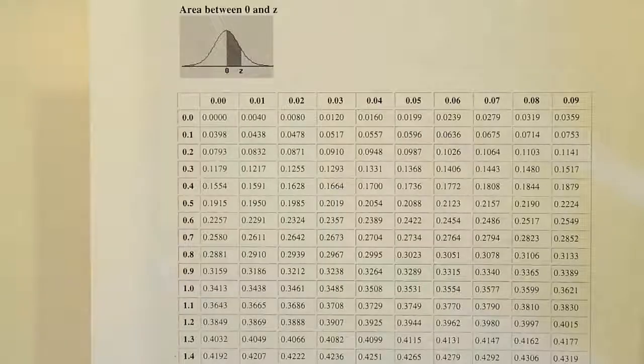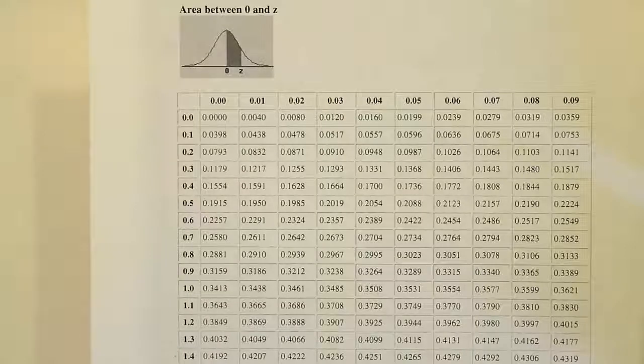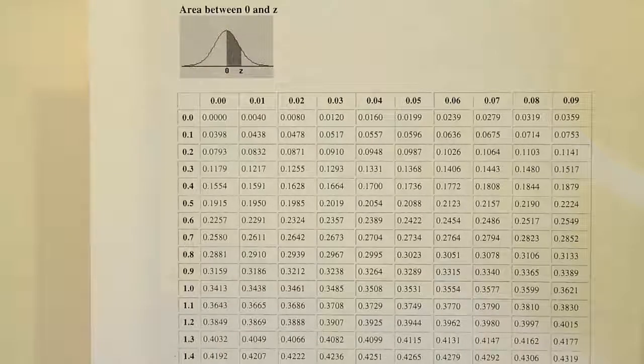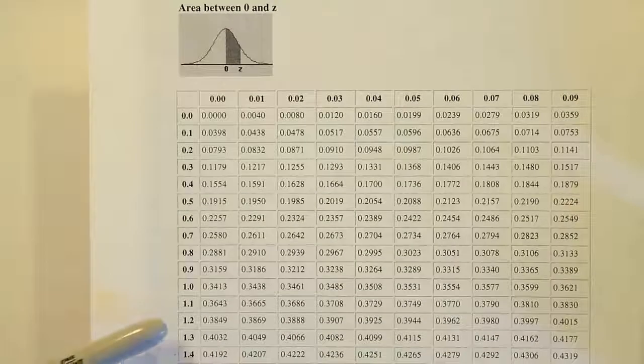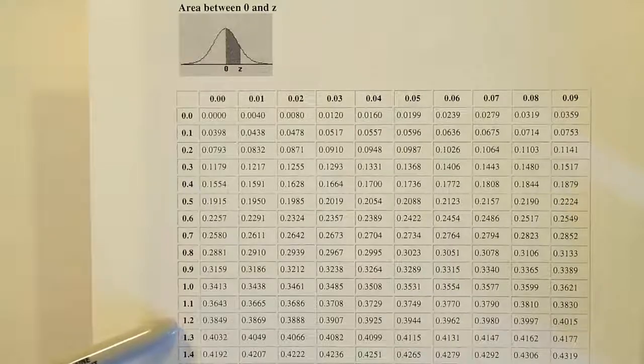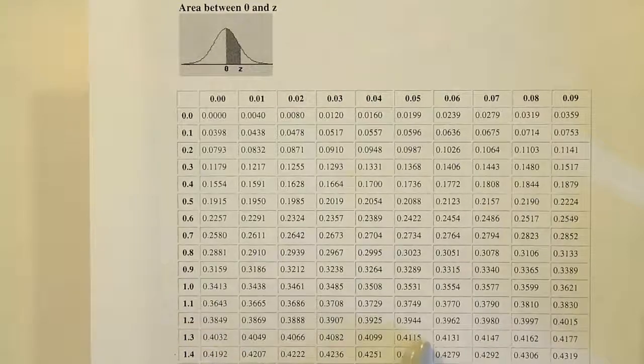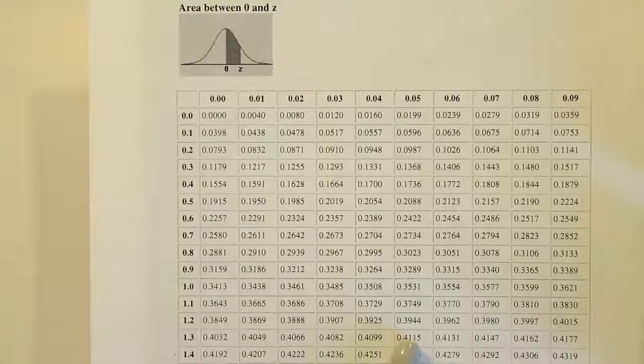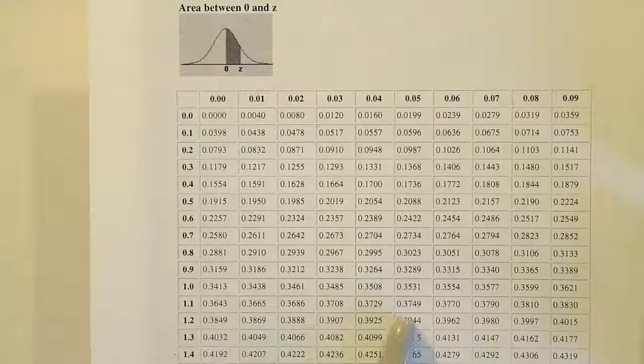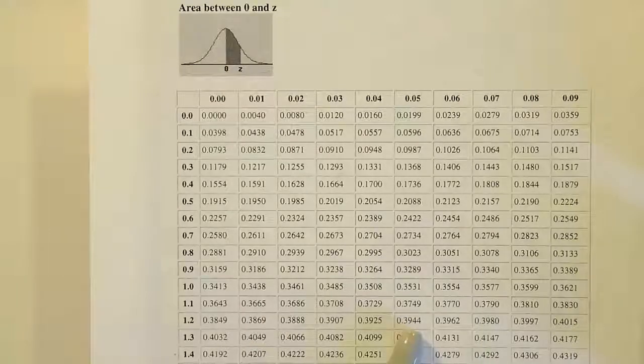Okay so I'm trying to look up negative 1.25 but we know we don't have negatives on the chart so we're just going to have to look up 1.25. So there's the 1.2 and if I go over to where it says 5, I'll have 1.25 and I get the answer 0.3944.